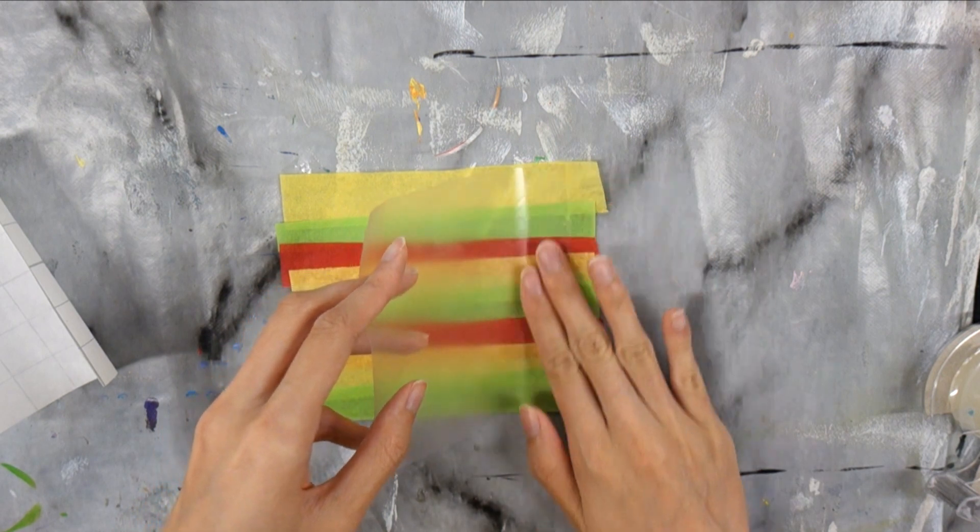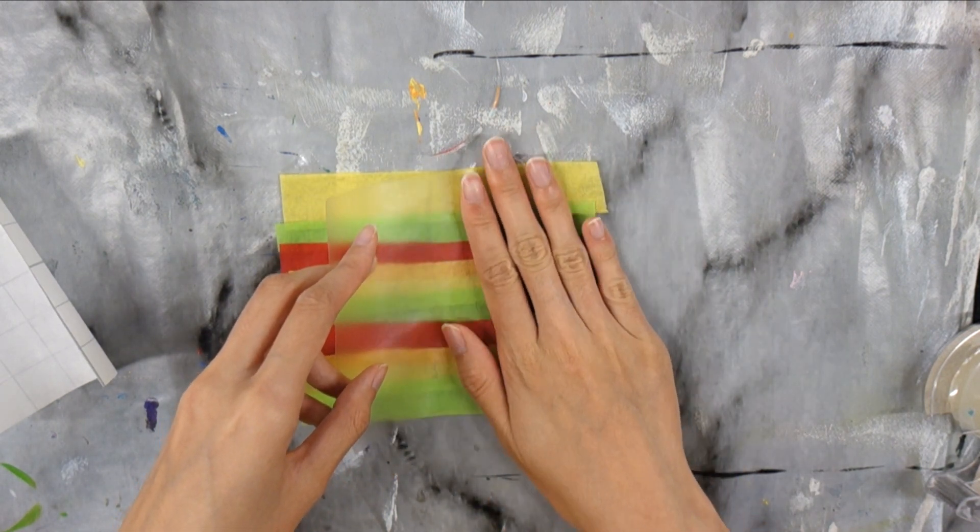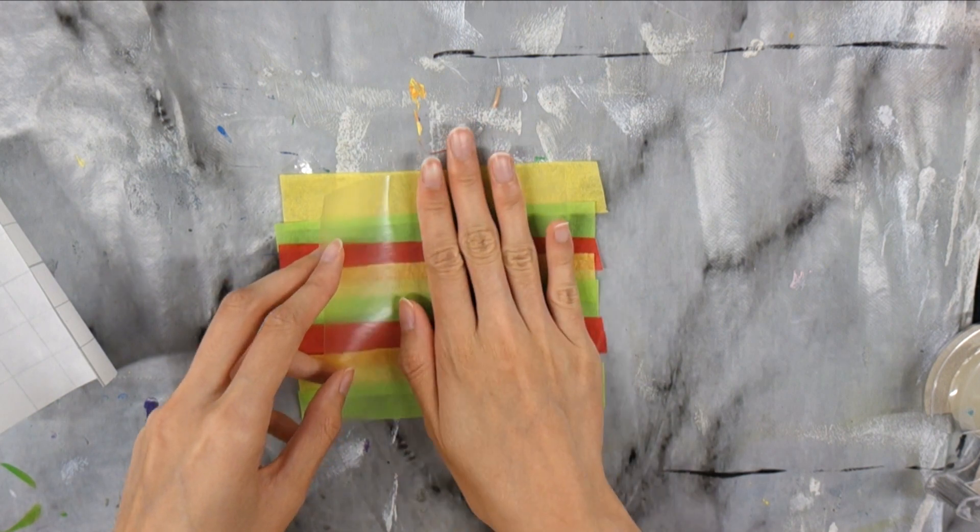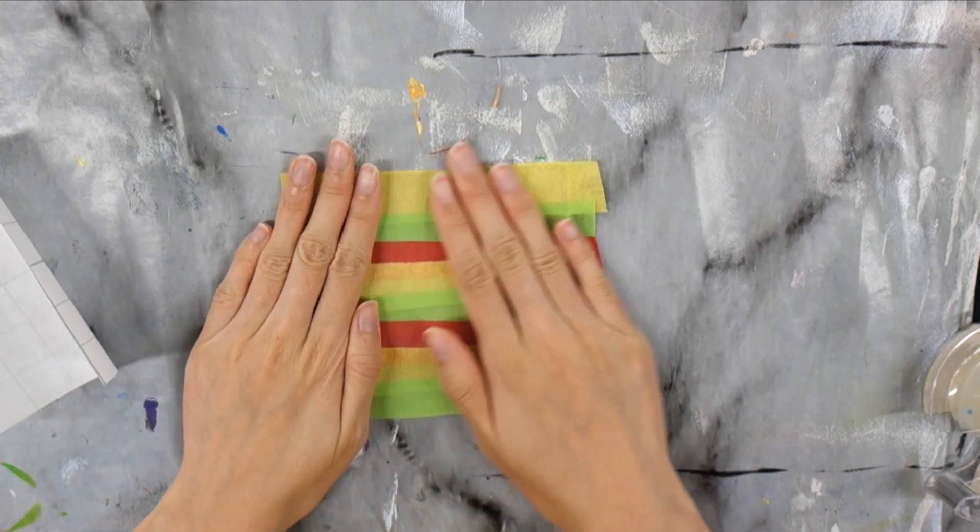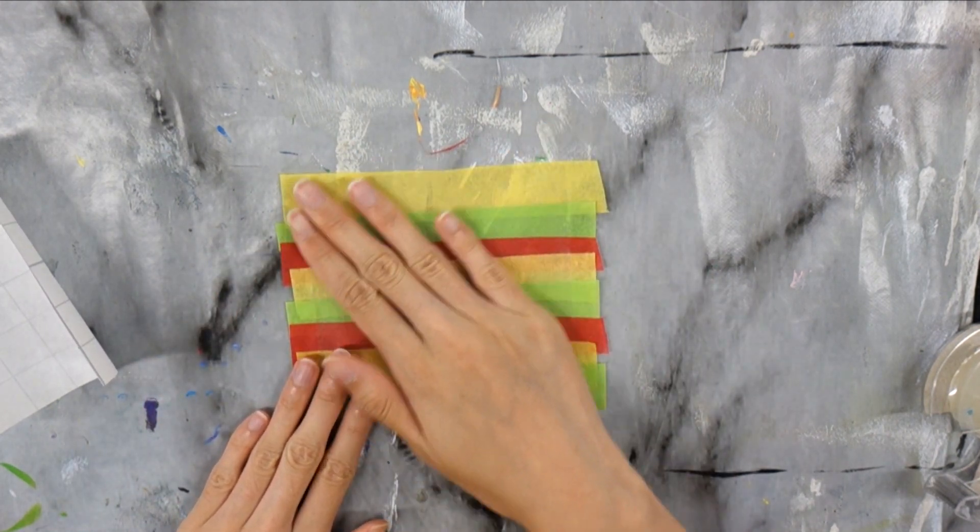Then starting on one side, place the square down and slowly smooth it out with your hands. The two squares should sandwich the tissue paper in between.